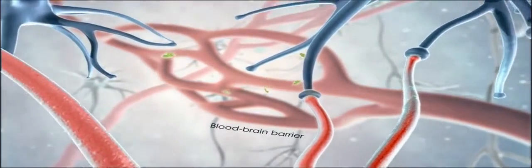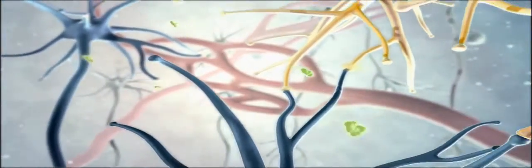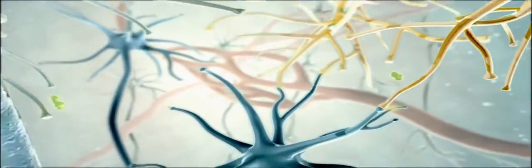They then travel through the bloodstream towards the CNS where they diffuse across the blood-brain barrier and into the surrounding tissues of the brain and spinal cord.